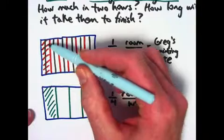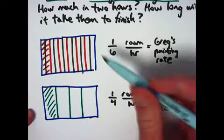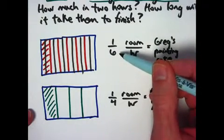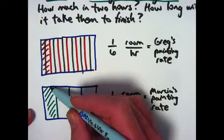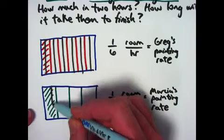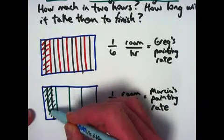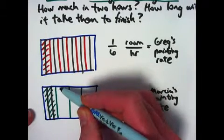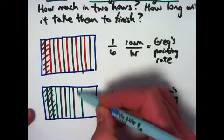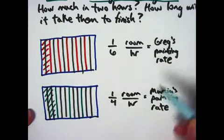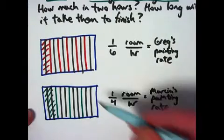Actually, in a half hour, so 2 twelfths in one hour. That's equivalent to 1 sixth. And for Marsha, we can split hers up into 3 pieces of equal size, indicating how much she can paint in 20 minutes, a third of an hour. In one hour, she can paint three of these. One-fourth is equivalent to 3 twelfths.